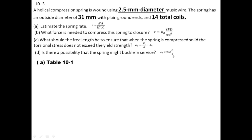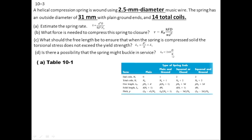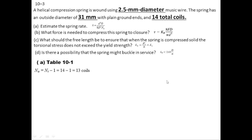Going to Table 10.1 for a plain and ground spring, the total number of coils equals the number of active coils plus one. So Na = Nt − 1. With Nt = 14, Na = 13. The solid length Ls = d × Nt. Substituting the values of Nt and d gives Ls = 35 millimeters.